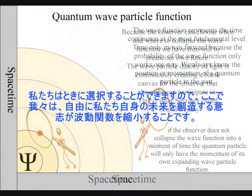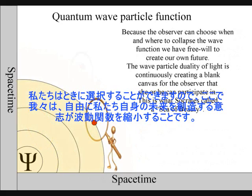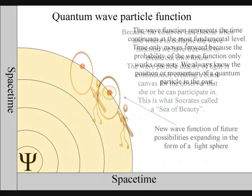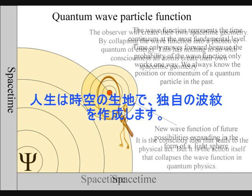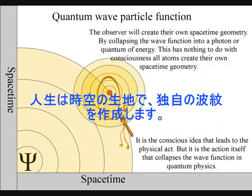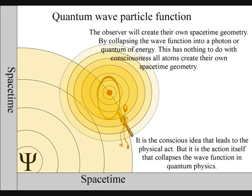It is because the observer can choose when and where to collapse the wave-function that we have free will. Life will create its own ripples in the fabric of space-time, forming its own broken symmetry of its own evolutionary path or timeline.